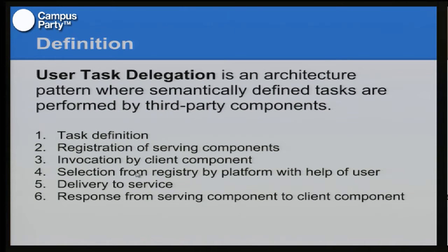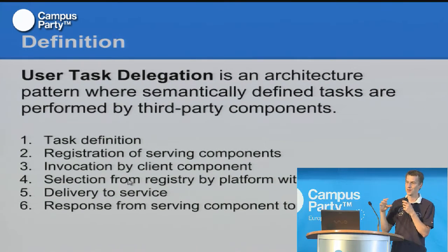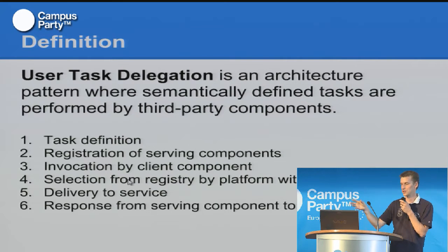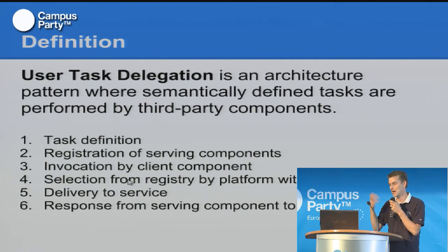To generalize, user task delegation is an architecture pattern where semantically defined tasks are performed by third-party applications. There are six different steps: first, before everything, you have to define the semantics — what is the user task, what does it mean to share data. Then, if everyone agrees, you have the process where you register the services, then the client application can invoke the service, the platform itself selects which service is used, the message is delivered to the service, and finally you get a response if the action has been performed.